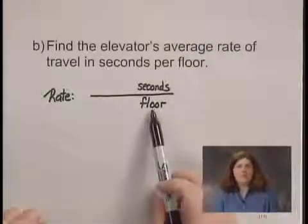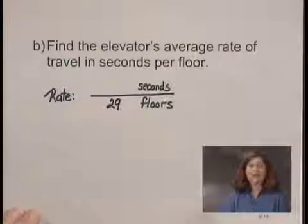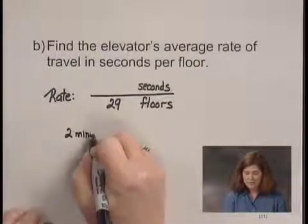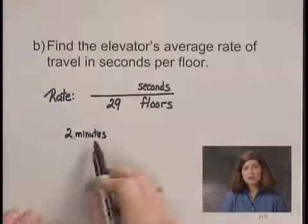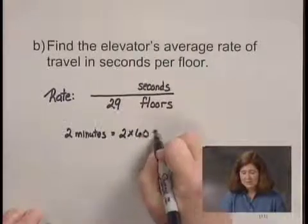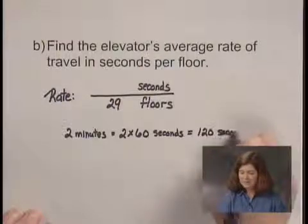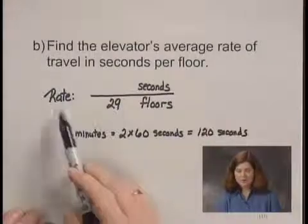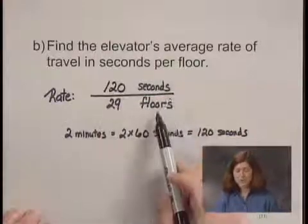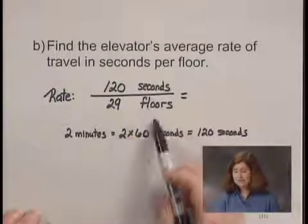We know from the first part that he traveled 29 floors. How many seconds did he travel? He traveled for 2 minutes, and each minute is 60 seconds, so he traveled 2 times 60, or 120 seconds. His rate in seconds per floor would be 120 seconds per 29 floors, giving us 120 over 29 seconds per floor.